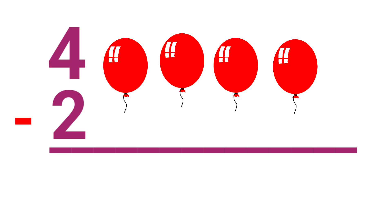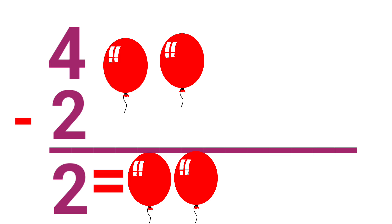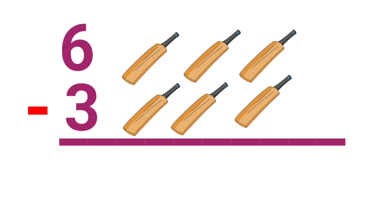Here the sum is 4 minus 2. There are 4 balloons. In that 4 balloons, 2 is popped out. Remaining balloons are 2. So the answer is 2. 4 minus 2 is 2. Let's see another example.